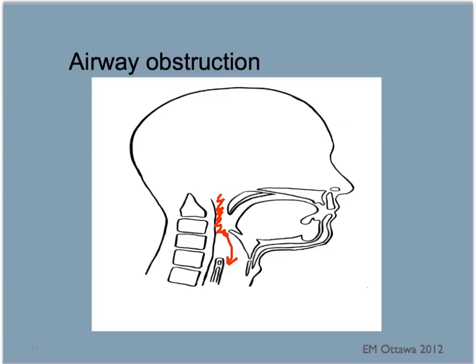Any distortion of the anatomy can cause obstruction as well — that can include fracture or swelling from an expanding hematoma that leads to compression. In patients with decreased level of consciousness, the tongue can fall backwards due to poor muscle tone, causing airway obstruction.